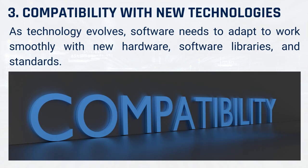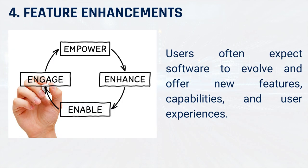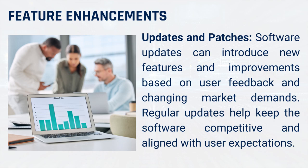3. Compatibility with new technologies. As technology evolves, software needs to adapt to work smoothly with new hardware, software libraries, and standards. Software updates often include compatibility enhancements to ensure the software remains functional on the latest hardware and software platforms. Without these updates, users may encounter compatibility issues. 4. Feature enhancements. Users often expect software to evolve and offer new features, capabilities, and user experiences. Software updates can introduce new features and improvements based on user feedback and changing market demands. Regular updates help keep the software competitive and aligned with user expectations.